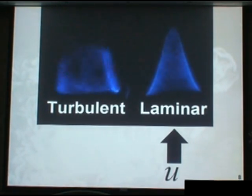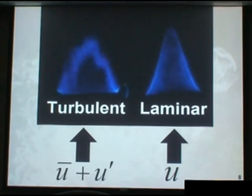And you can see the turbulent flame moving around significantly. In this case, the laminar case, we have a constant velocity coming out of the burner itself. And in the turbulent case, we have some average velocity plus a fluctuating component.